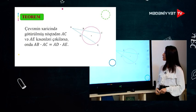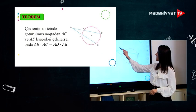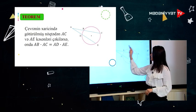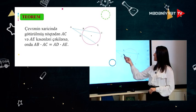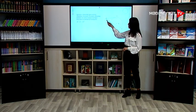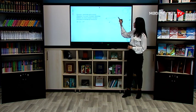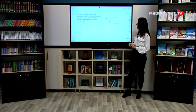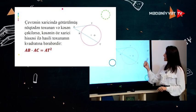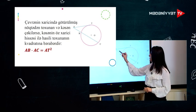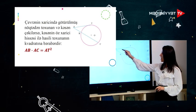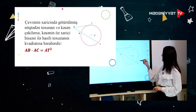Çevrə xaricindən götürülmüş nöqtədən AS və AY kəsənləri çəkilərsə, bu zaman AB vurulsun AS bərabər olacaq AD vurulsun AY-ə. Çevrənin xaricindən götürülmüş nöqtədən toxunan və kəsən çəkilərsə, kəsənin tam uzunluğunun öz xarici hissəsi ilə hasili toxunanın kvadratına bərabərdir. Yəni AT kvadratı bərabər olacaq AB vurulsun AS-yə.